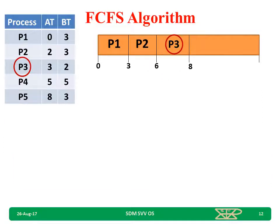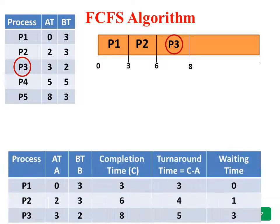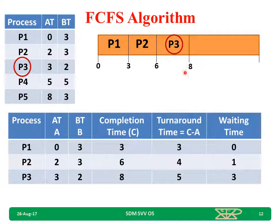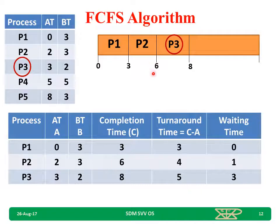Now P3. P3 is allocated the CPU after 6 milliseconds. It takes 2 milliseconds, so 6 plus 2 equals 8 milliseconds — P3 execution completes at 8 milliseconds. Turnaround time: completion minus arrival = 8 minus 3 equals 5. Waiting time: CPU given at 6 milliseconds, P3 arrived at 3 milliseconds, so 6 minus 3 equals 3 milliseconds waiting time.